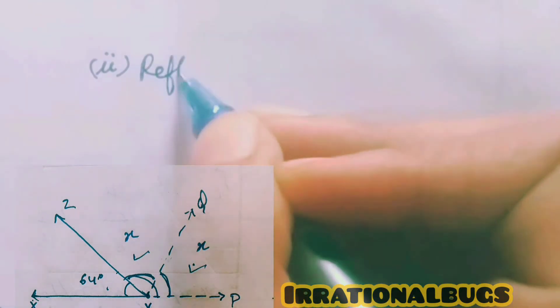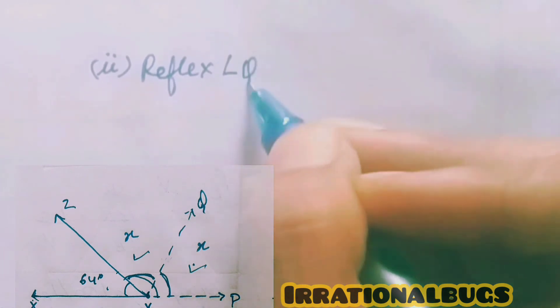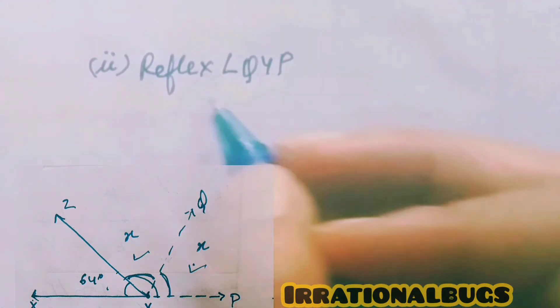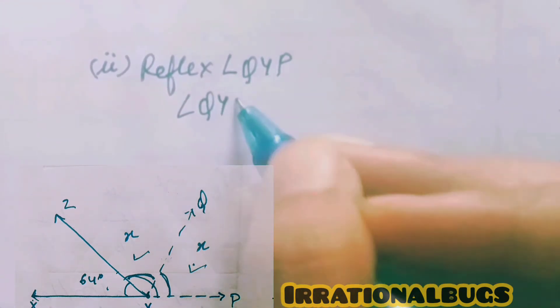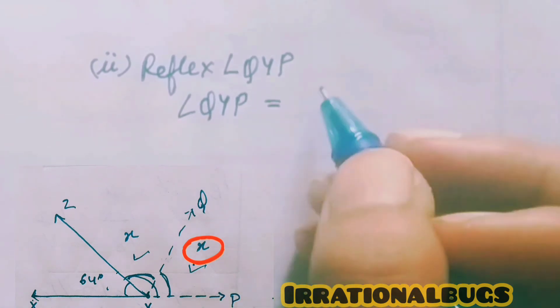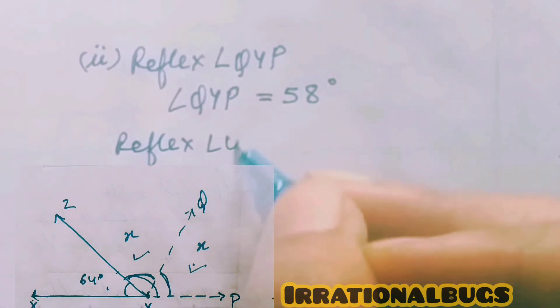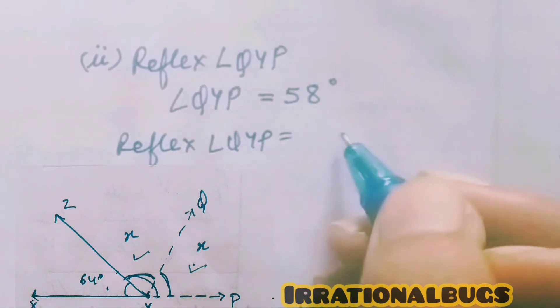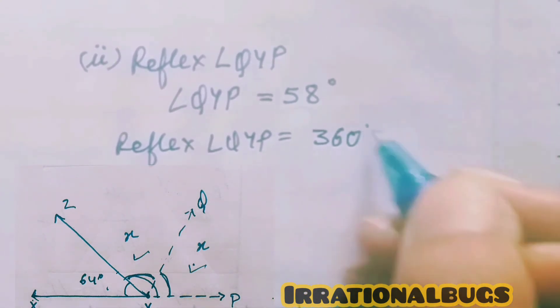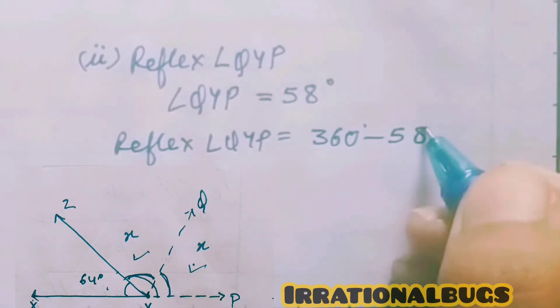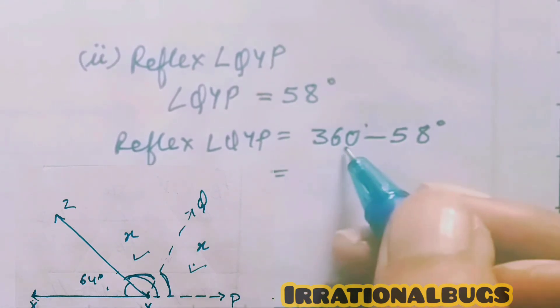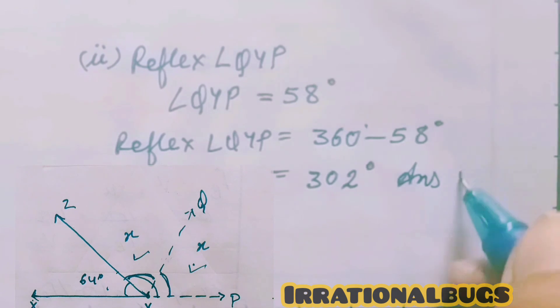Further, second part में हमें find करना है reflex angle Q, Y, P. तो angle Q, Y, P अभी हमने find किया है, इसकी value हमारे पास है 58 degrees. So, reflex angle find करने के लिए हमें 360 में से minus करना होता है given angle. 360 minus 58 degrees. 60 minus 58 will be 2 and 30, 302 degrees is our answer.